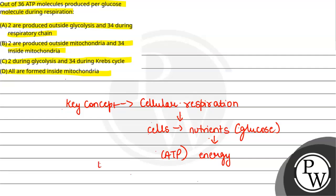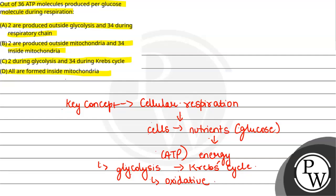Now if we break down cellular respiration into different stages, there are three main parts. First comes glycolysis, then comes the Krebs cycle — which we also call the citric acid cycle or TCA cycle — and lastly comes oxidative phosphorylation, or oxphos. These three main stages together constitute cellular respiration.